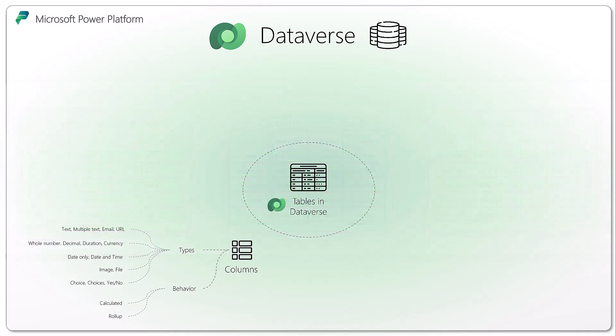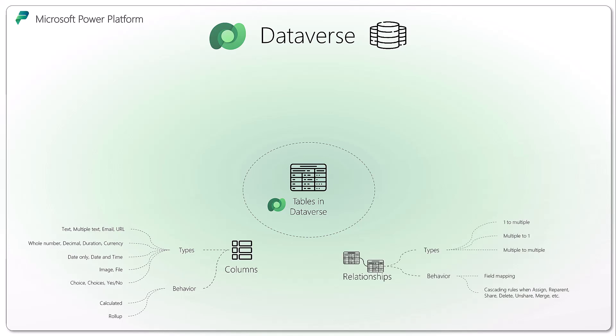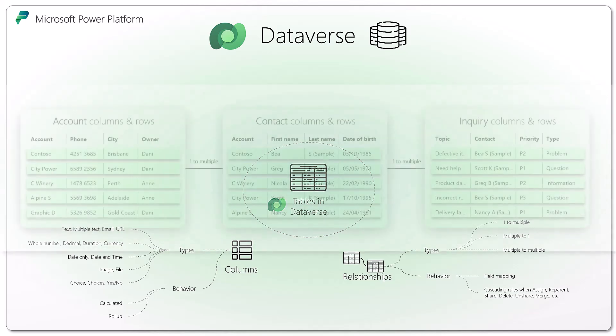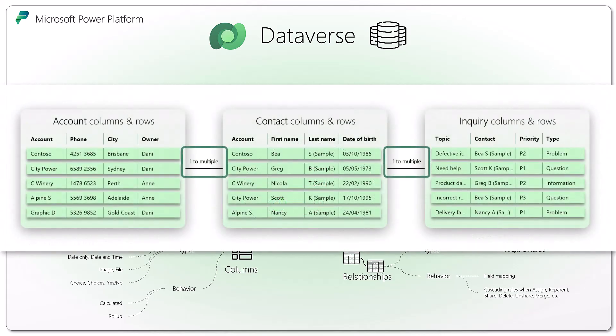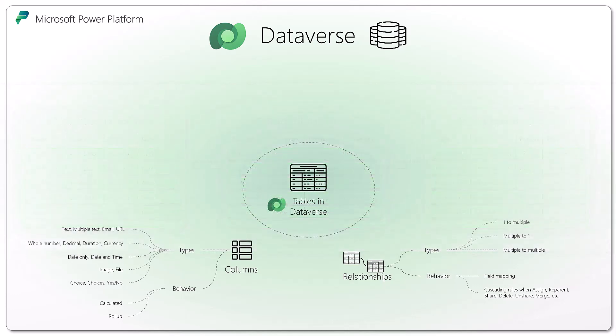You can also apply behaviors — for example, you can set columns to be calculated or to have some logic behind them. You can create relationships between tables of different types: one-to-many, many-to-one, many-to-many. You can also define behaviors for field mapping. For example, when you create one record related to another, you can pre-populate some of the fields. You can also define cascading rules when your related record is updated, related, or reassigned, and how you want this to affect your related table.